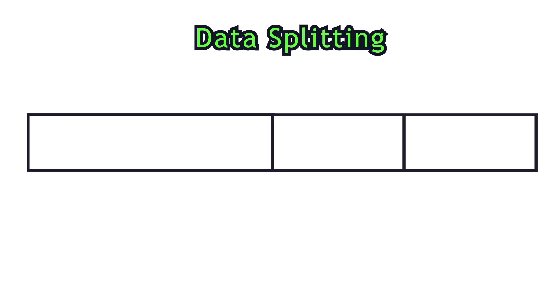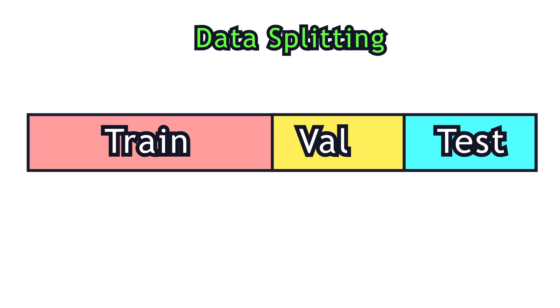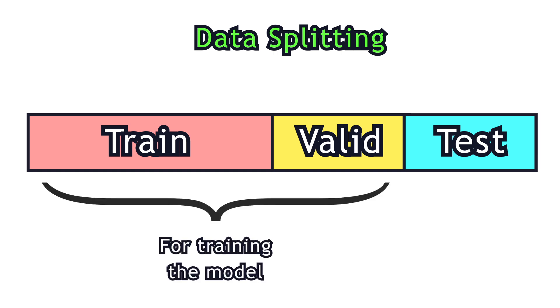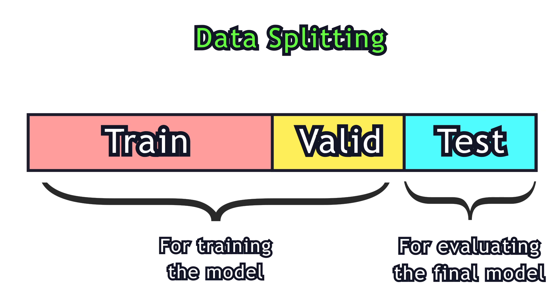At the very beginning, you split the data into train, validation, and test sets. Train and validation data are used for training the model, and test data for evaluating the final model.